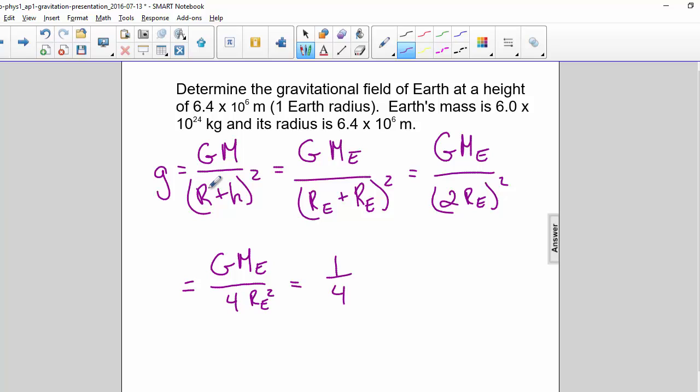So we have one-fourth, and we know GM_E over r_E squared equals 9.8. So it's one-fourth of 9.8, which is 2.45 meters per second squared.